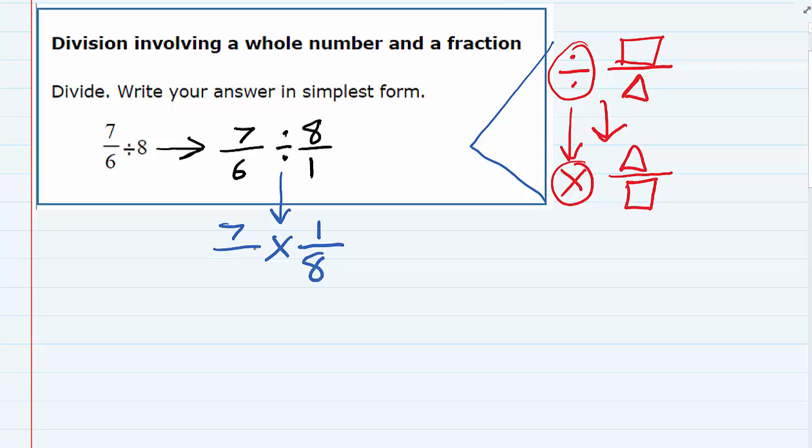The 7 over 6 stays the same. So we change division to multiplication, and we flip the fraction behind it. And now we have a multiplication problem, which to do, we can cross cancel if it's possible.